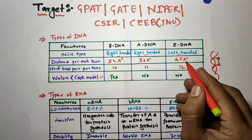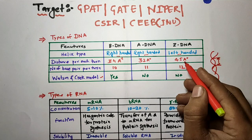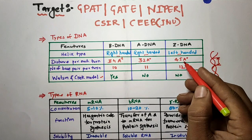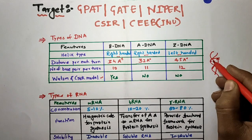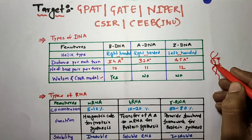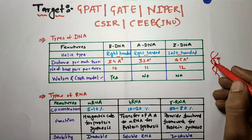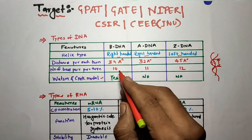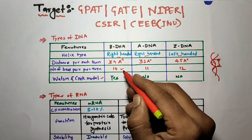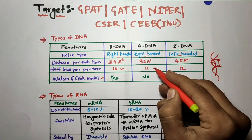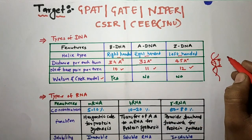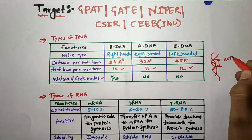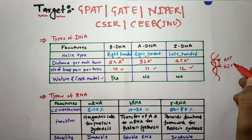Now we will see the number of base pairs per turn. In each turn there are base pairs — A-T and G-C base pairs. B-DNA consists of 10 base pairs per turn, A-DNA has 11 base pairs per turn, and Z-DNA has 12 base pairs per turn.